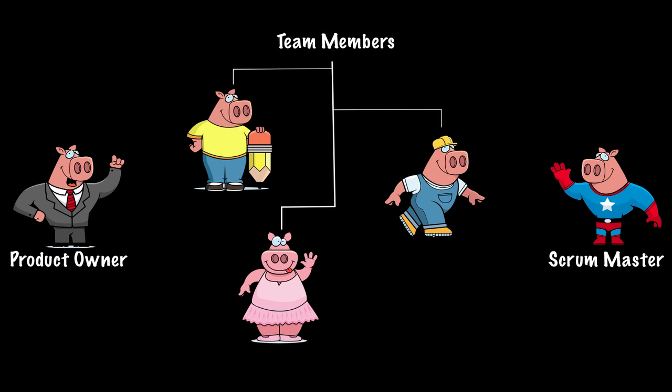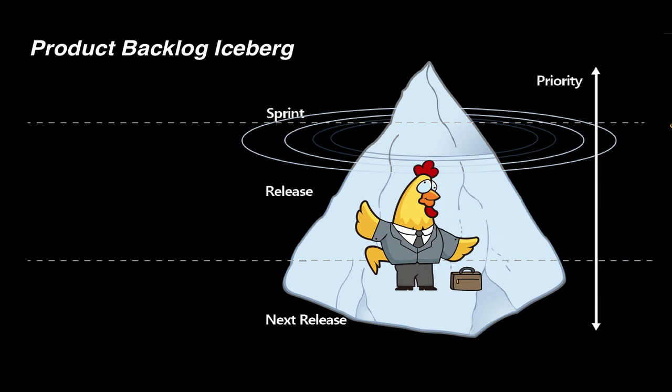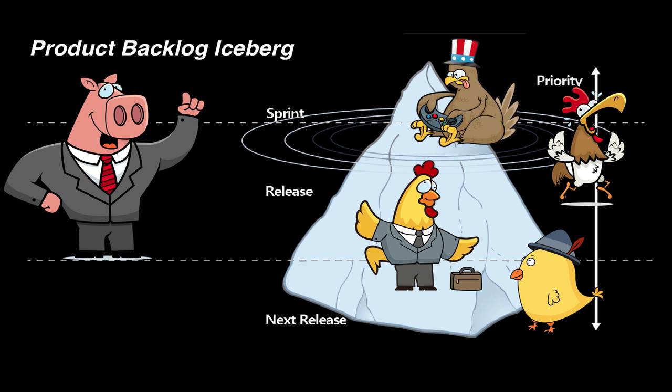Scrum projects begin with a product backlog. You can think of a product backlog as a wish list of input from all parties involved in the project: developers, executives, customers, support staff, and the like. This input is groomed and prioritized by the product owner, typically in a user story format.